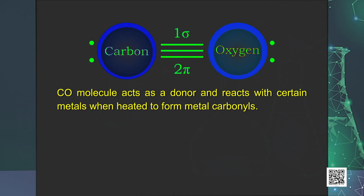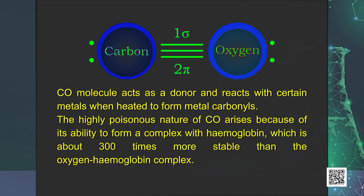The highly poisonous nature of CO arises because of its ability to form a complex with hemoglobin which is about 300 times more stable than the oxygen hemoglobin complex. This prevents hemoglobin in the red blood corpuscles from carrying oxygen around the body and ultimately resulting in death.